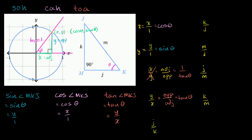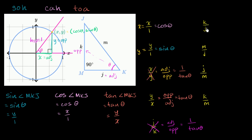Now let's look at j over k — we're moving over to this triangle. Relative to this angle, j is the length of the adjacent side and k is the length of the opposite side. So this is adjacent over opposite, which is the reciprocal of the tangent function — not one of our choices, so we rule that out. Now k over j: that's opposite over adjacent, which equals tangent of theta, or tangent of angle mkj. So tangent is equal to k over j.